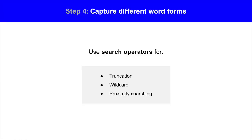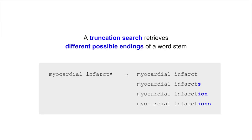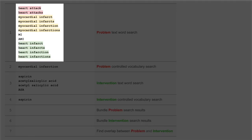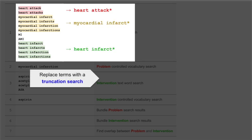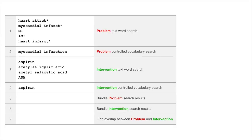Step 4: Capture different word forms using search operators for truncation, wildcard, and proximity searching. Begin with a truncation search to retrieve the different possible endings of a word's stem. In PubMed, add the asterisk symbol to the end of the stem. For example, 'myocardial infarct*' is a truncation search that captures multiple related terms. Our strategy has terms that share a common word stem, so we can replace multiple terms with a single truncation search, which compresses the strategy and retrieves terms we may have overlooked.